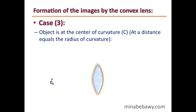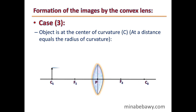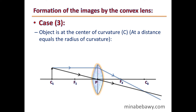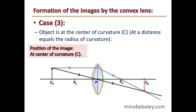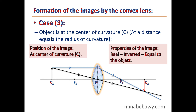Case 3 — the object is at the center of curvature C, or at a distance equal to the radius of curvature. The first light ray is parallel to the principal axis and refracts through the focus. The second light ray passes through the optical center. The image is formed at the center of curvature, and it is real, inverted, and equal in size to the object.